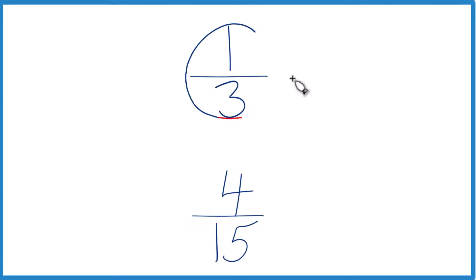Let's look at which fraction here, 1/3 or 4/15, is larger. So if we want to figure out which fraction is greater, we could just divide 1 by 3 on a calculator, get a decimal, divide 4 by 15, get a decimal, and compare the decimals.